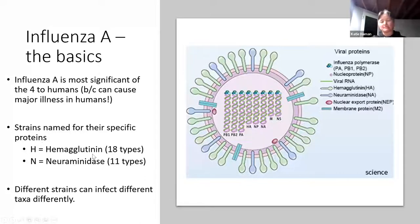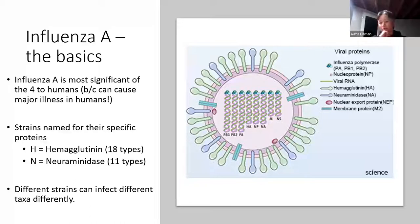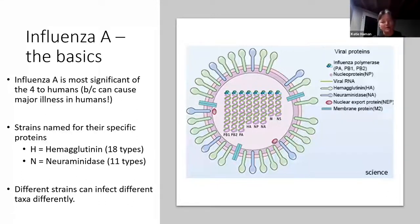The strains for influenza A tend to be named by their surface proteins — hemagglutinin and neuraminidase — with 18 different types of hemagglutinin and 11 of the neuraminidase. These surface proteins on the virus help the virus invade the host cell, similar to the spike protein in SARS-CoV-2. They help the virus bind to the host cell, enter it, and replicate.